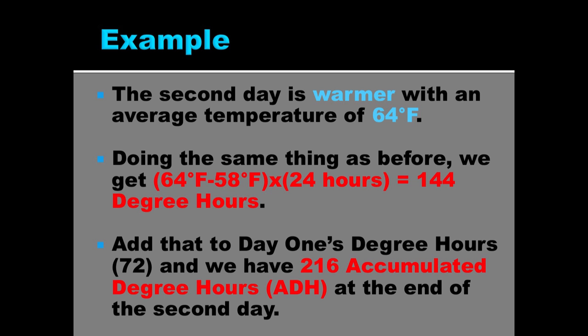But that's not the accumulated degree hours. So we need to accumulate those two values. So we add them together. 72 plus 144 equals 216 accumulated degree hours at the end of the second day.